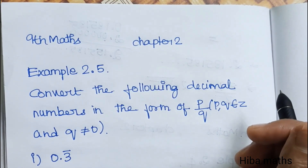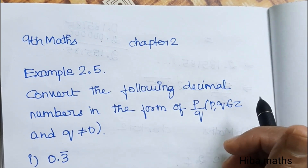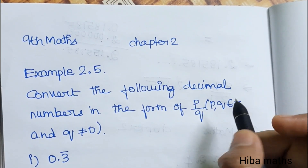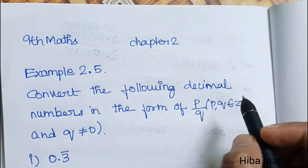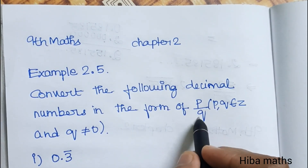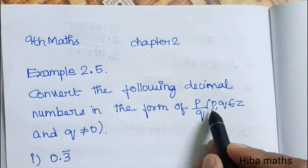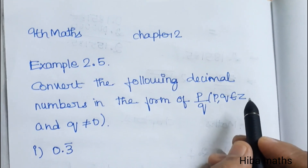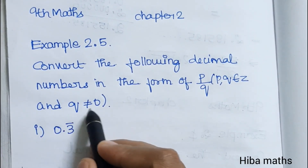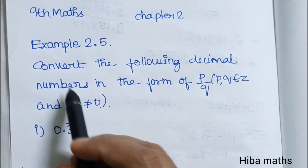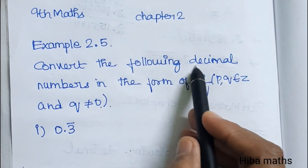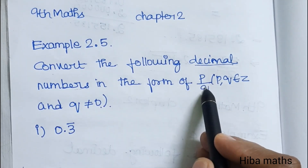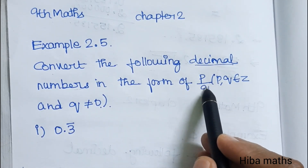Hello students, welcome to Hibamaks. 9th Standard Maths Chapter, Example 2.5. Convert the following decimal numbers in the form of P by Q, where P and Q are elements of integers Z, and Q is not equal to 0. So we have to convert decimal numbers into the fraction form P by Q.